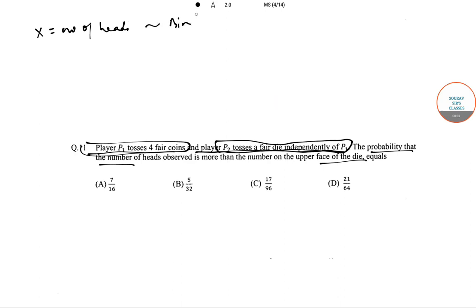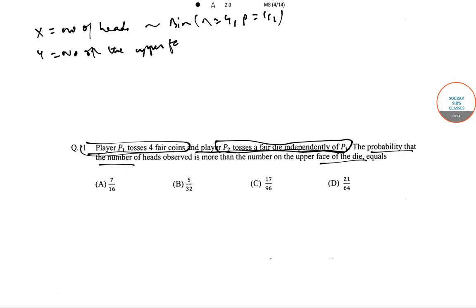X follows a binomial distribution with n=4 and p=1/2, and Y, the number on the upper face, follows a rectangular (discrete uniform) distribution with parameter 6.